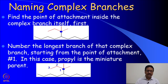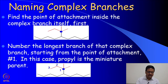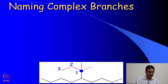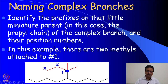Here, in the red branch, you can see a blue dot that identifies the point through which this branch is attached to the main chain. Now considering that blue point as the point of attachment, we need to identify the number of carbon atoms present in the longest chain in the complex branch. Starting from that blue dot, we can write the longest chain as 1, 2, and 3.